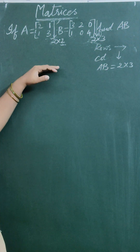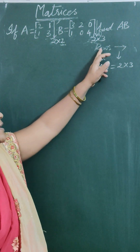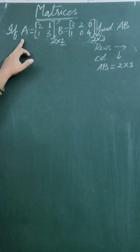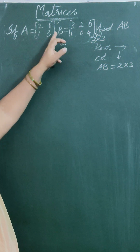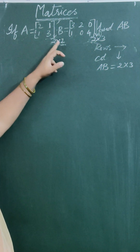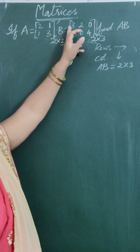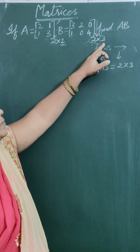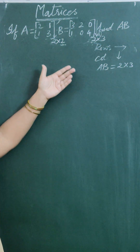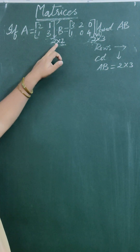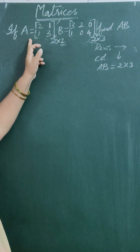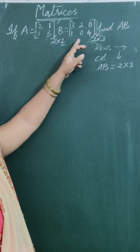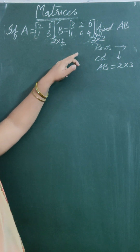First we have to write the order of the matrix. Here rows means horizontal and column means vertical. For matrix A, number of rows is equal to 2 and number of columns is equal to 2. For matrix B, number of rows is equal to 2 and number of columns equal to 3. Matrix multiplication is possible if and only if number of columns in first matrix is equal to number of rows in second matrix. Here it is equal to 2, so it matches.